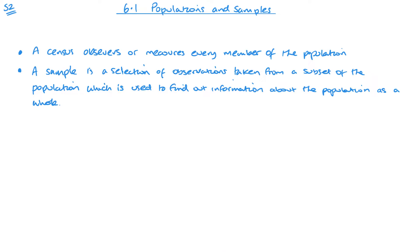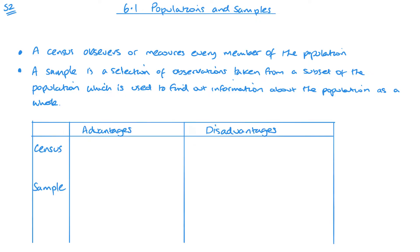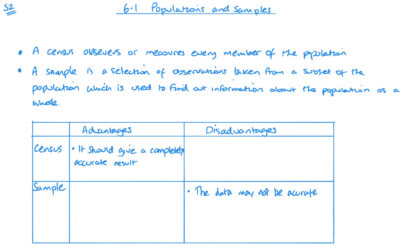Now obviously these have advantages and disadvantages, which is why you would choose when you would use a sample and when you would use a census. The advantage of a census is that it should give a completely accurate result. For a sample, the disadvantage is that the data may not be as accurate, and the size of the sample will matter. If the sample is not large enough, it might not give us enough information about small subgroups of the population. If I was talking back about the school, obviously there's different years in the school, so if I'm doing a proper sample I should have a representative amount from each year group. Taking a large enough sample does matter.